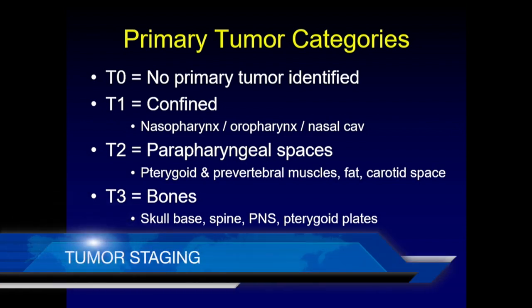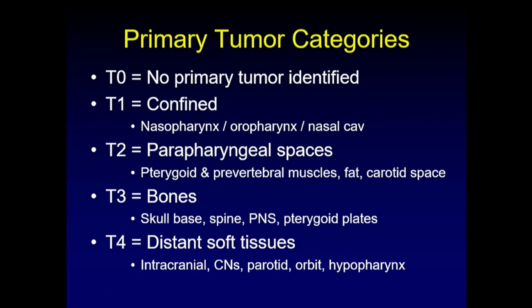For primary tumor classification: T0 is no primary tumor identified. T1 is disease confined to the nasopharynx, allowing extension to the oropharynx or nasal cavity but confined to mucosal spaces. T2 involves extension to the parapharyngeal spaces — the pterygoid or prevertebral muscles, parapharyngeal fat, or carotid space. T3 begins to involve bone: skull base, spine, paranasal sinuses, or pterygoid plates. T4 requires involvement of distant soft tissues — intracranial vault, cranial nerve spread, parotid gland, orbits, or hypopharynx.